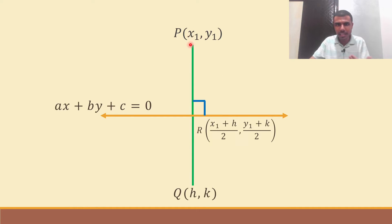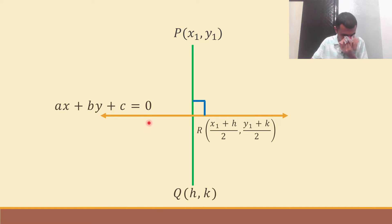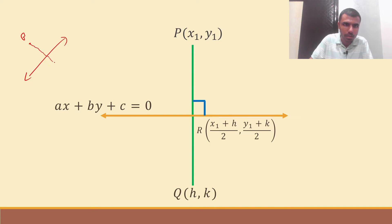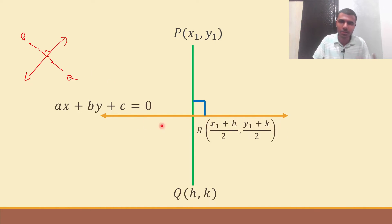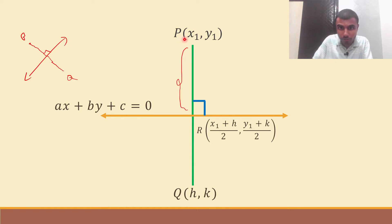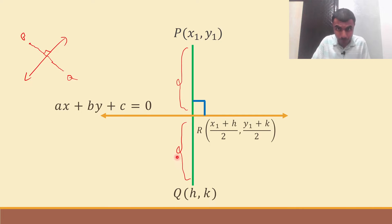When I try to get an image of this point with respect to this line — image means, consider this to be a mirror. If it is a mirror then I'll get an image like this. It's the mirror reflection of this point with respect to this line. Now since Q is the image of P, Q will be somewhere on the other side — and the line segment PQ will be perpendicular to the line.